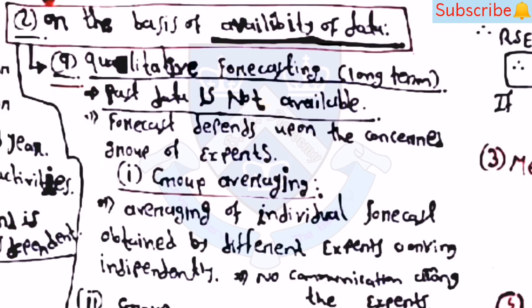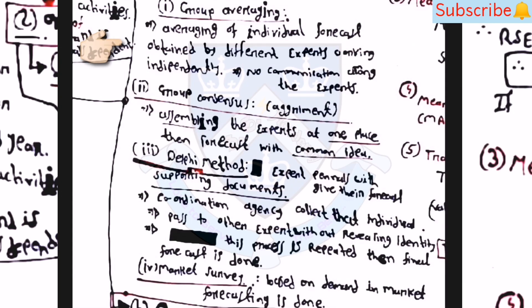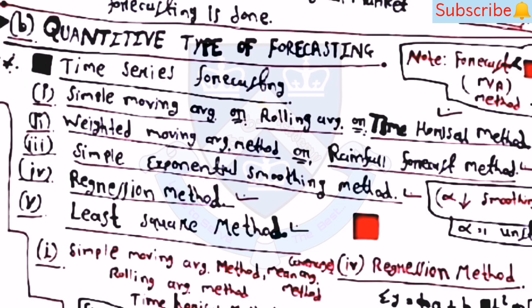Based on data availability, there are two types: qualitative and quantitative forecasting. Qualitative types include group averaging, group consensus, Delphi method, and market survey. Quantitative forecasting (also called time series forecasting) has five methods: simple moving average, weighted moving average (rainfall forecasting method), simple exponential smoothing, regression, and least squares.